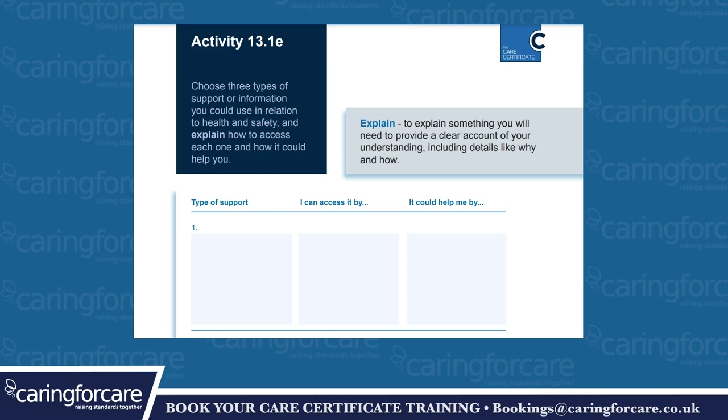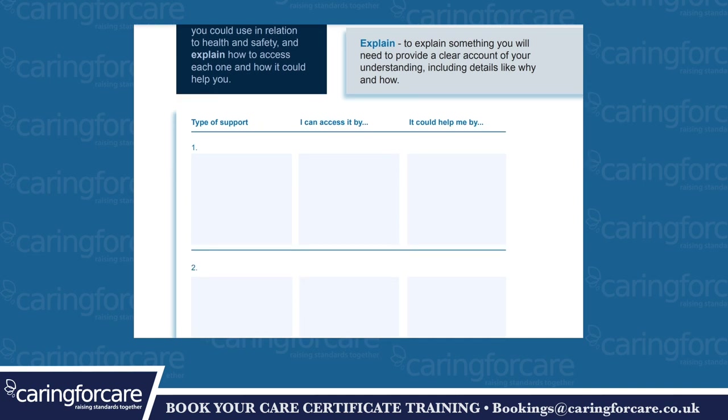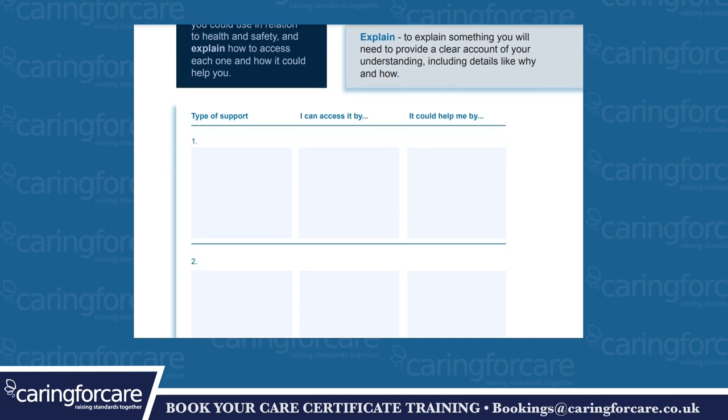Activity 13.1e: choose three types of support or information you could use in relation to health and safety, and explain how to access each one and how it could help you. To explain something you will need to provide a clear account of your understanding, including details like why and how. Types of support — I can access it by, I can access it by, it could help me by.